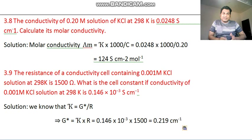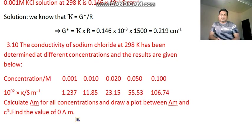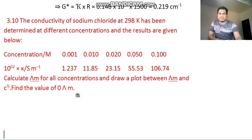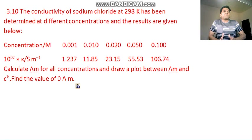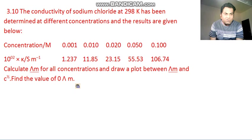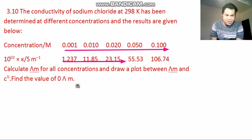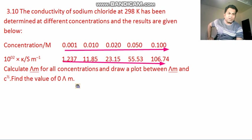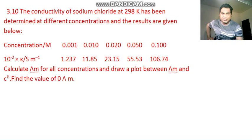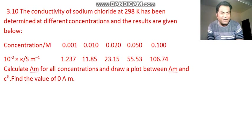Now we are entering the next question, which is slightly more involved. Question 3.10: the conductivity of sodium chloride at 298 K has been determined at different concentrations and the results are given in a table. When concentration is 0.01, conductivity is 1.237; when concentration increases slightly to 0.02, conductivity is 11. As concentration increases, the value of conductivity also increases. Calculate lambda M for all concentrations and draw a plot between lambda M and c to the power of half.